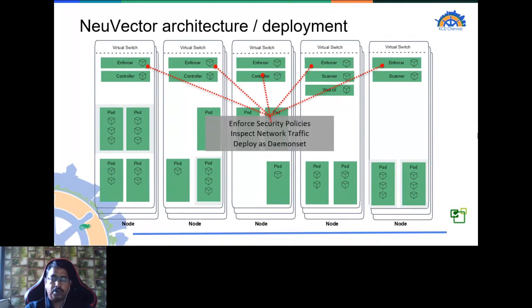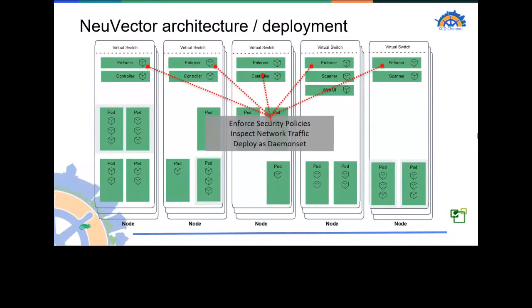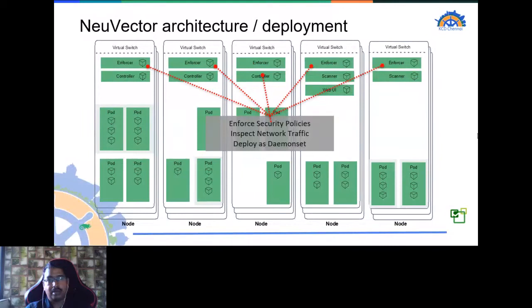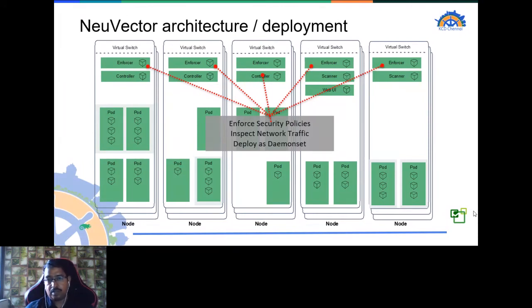NeuVector is also easy to deploy. It can be deployed in multiple ways via Helm or via kubectl, and you can completely automate installation using config maps. The entire installation can be done in about 10 to 15 minutes — it's just like deploying an application on a Kubernetes cluster. For those using Rancher, it's even easier because you can deploy NeuVector from within the Rancher interface and access it directly from there.